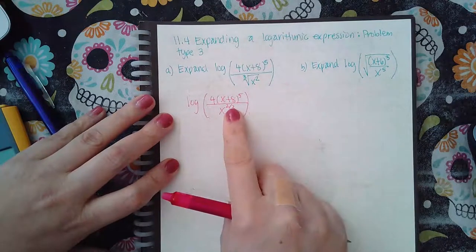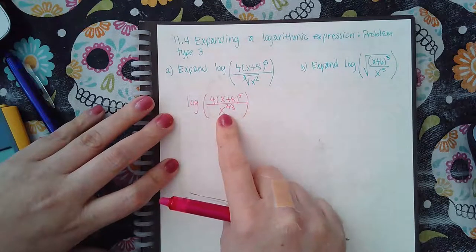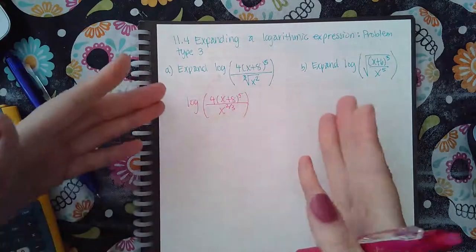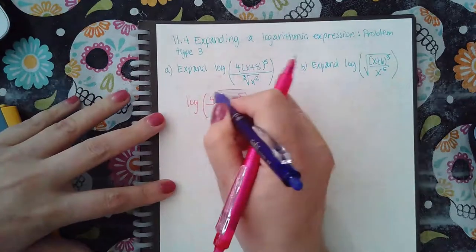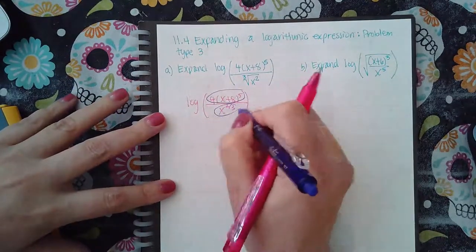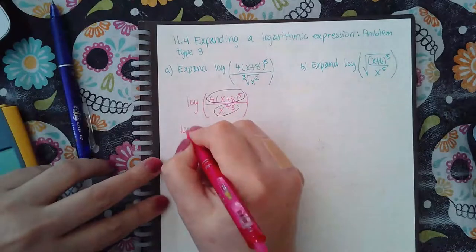The x to the two-thirds only applies to one term so I don't have to simplify this any further. I can go straight into my quotient rule and take the numerator and the denominator. So log of 4x plus 8 to the fifth minus log of x to the two-thirds.